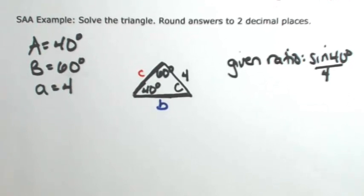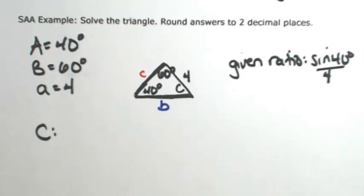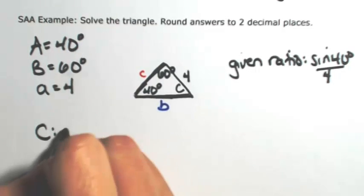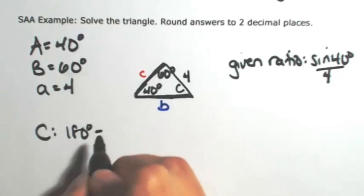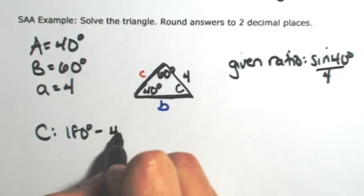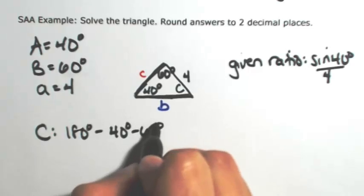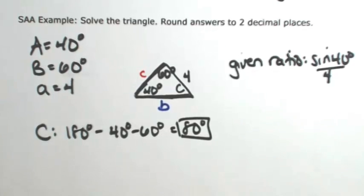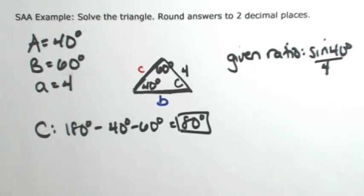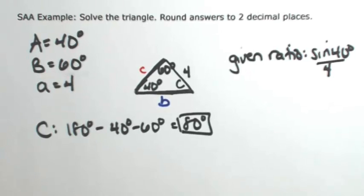The first thing I can find pretty easily is angle C because all these angles add up to 180 degrees. So 180 minus 40 minus 60 gives us 80 degrees. Okay, so angle C is done.